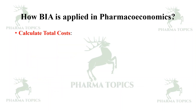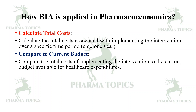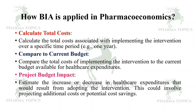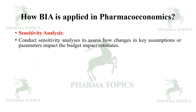Calculate the total cost associated with implementing the intervention over a specific period, for example one year. Compare to the current budget — compare the total cost of implementing the intervention to the current budget available for healthcare expenditures. Project budget impact — estimate the increase or decrease in healthcare expenditures that would result from adopting the intervention, which could involve projecting additional costs or potential cost savings.